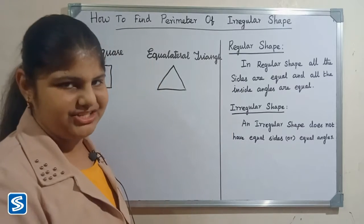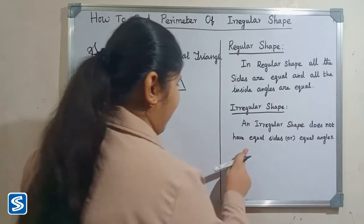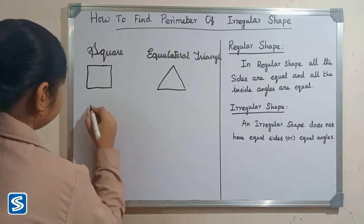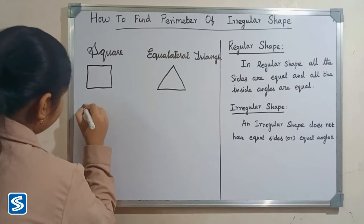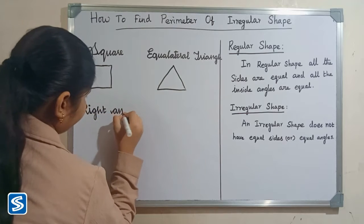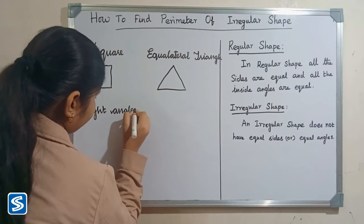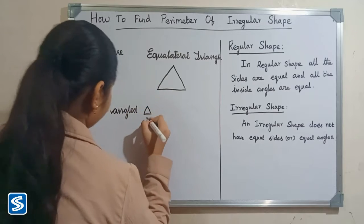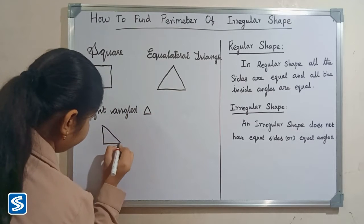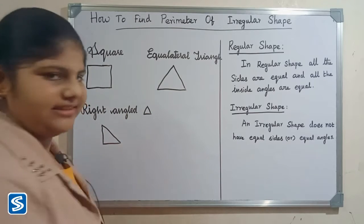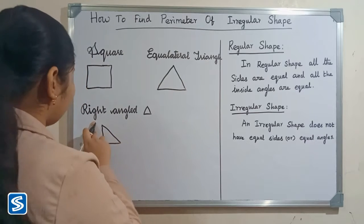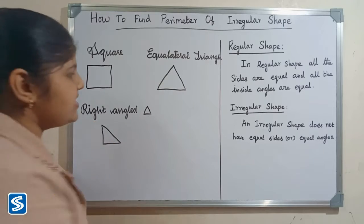Next we will see what is meant by irregular shape. An irregular shape does not have equal sides or equal angles. For example, a right angle triangle — a right angle triangle does not have equal sides or equal angles, so a right angle triangle is an irregular shape.